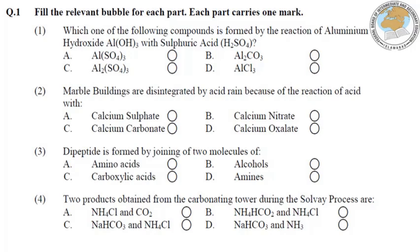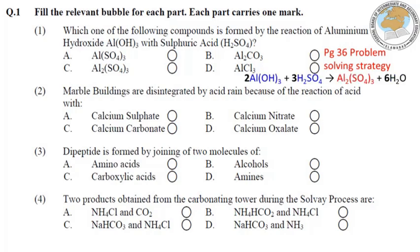Fill the relevant bubble for each part — bubble صحیح طریقے سے fill کرنا ہے، زیادہ باہر یا صرف اندر ہی نہ رہ جائیں۔ Question 1: Which one of the following compounds is formed by the reaction of aluminium hydroxide with sulfuric acid? یہ page number 36 کی problem solving strategy سے solve ہوگا۔ Al(OH)₃ اور H₂SO₄ جب react کرتے ہیں تو aluminium sulfate بناتے ہیں — answer is C۔